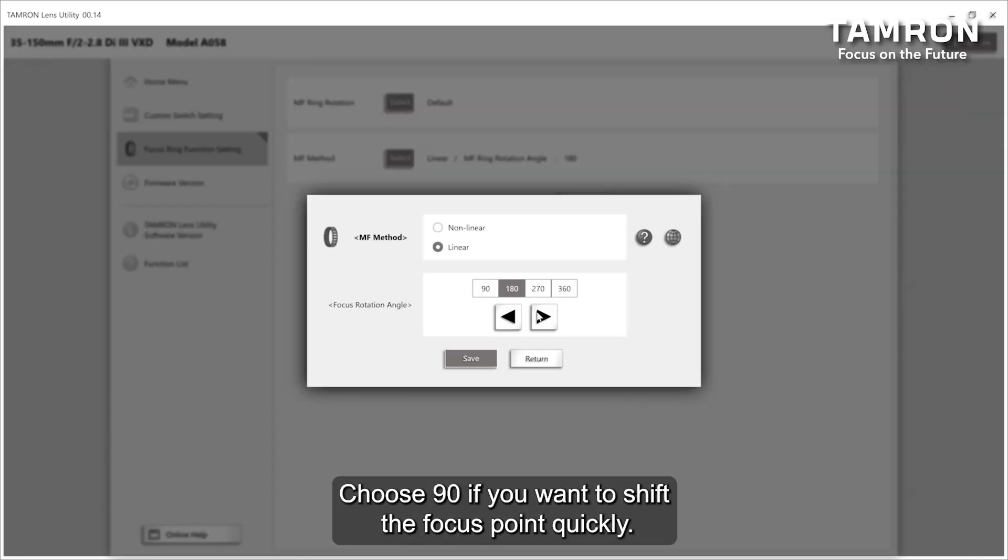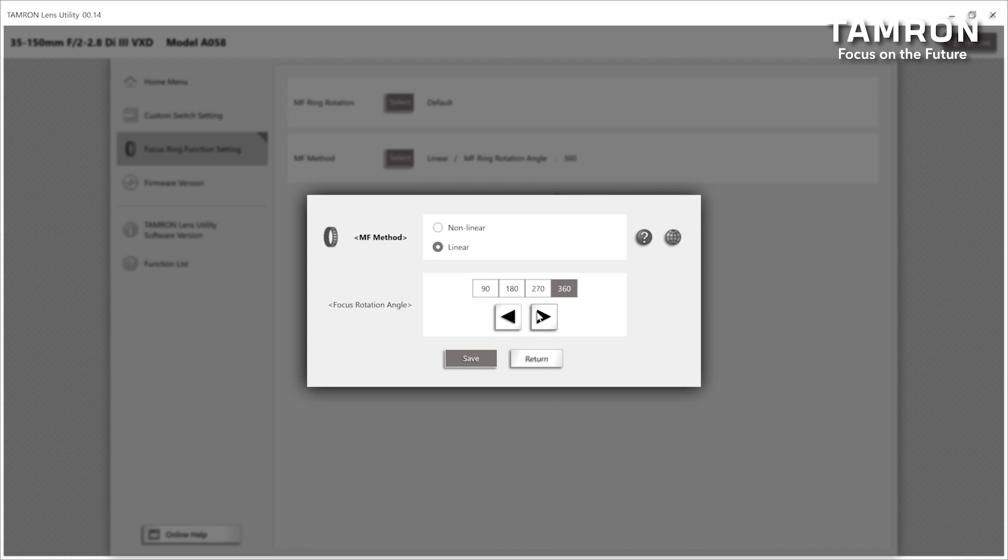Choose 90 if you want to shift the focus point quickly. Choose 360 if you want to adjust the focus point precisely.